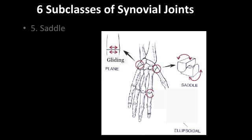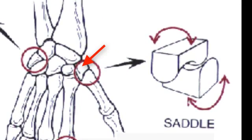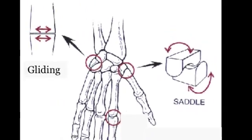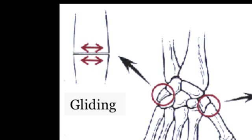The saddle joint exists between the trapezium bone — that's the carpal bone in the wrist — and the metacarpal of the thumb. The metacarpal of the thumb sits like a rider in the saddle on top of the trapezium bone. Then we have a gliding joint, where the short bones of the carpals and the tarsals in the foot slide back and forth with respect to one another in a gliding movement.